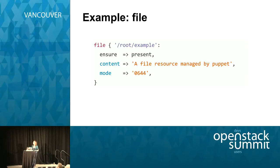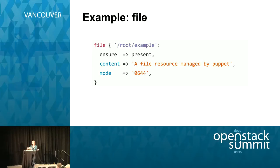As an example, the file resource is a built-in resource in Puppet. The type for the file resource lets us specify things like the content, permissions, name, and file path. The back-end implementation — the provider — is pretty basic. It just uses basic POSIX utilities built into Ruby to manage the file.